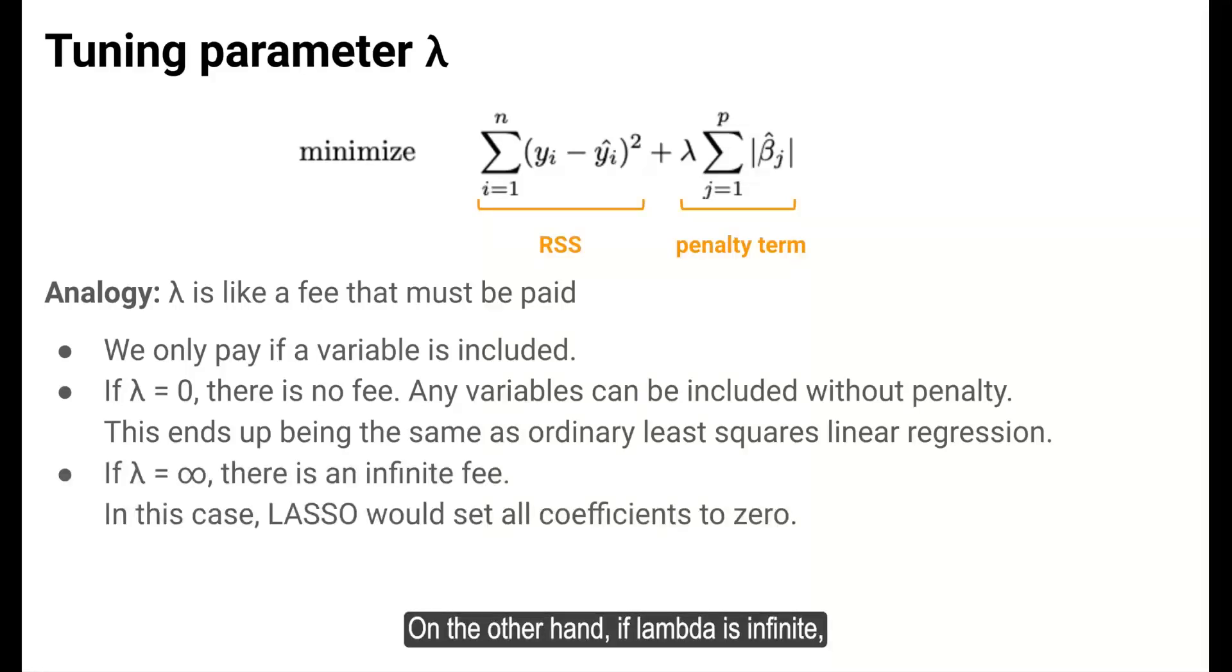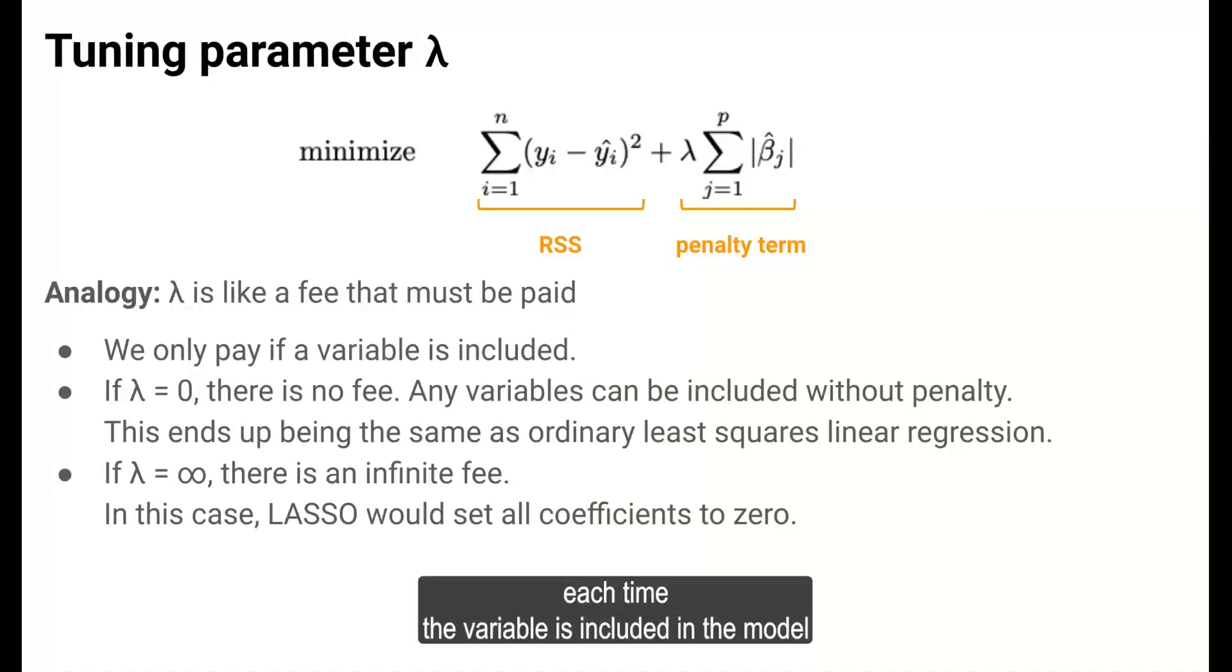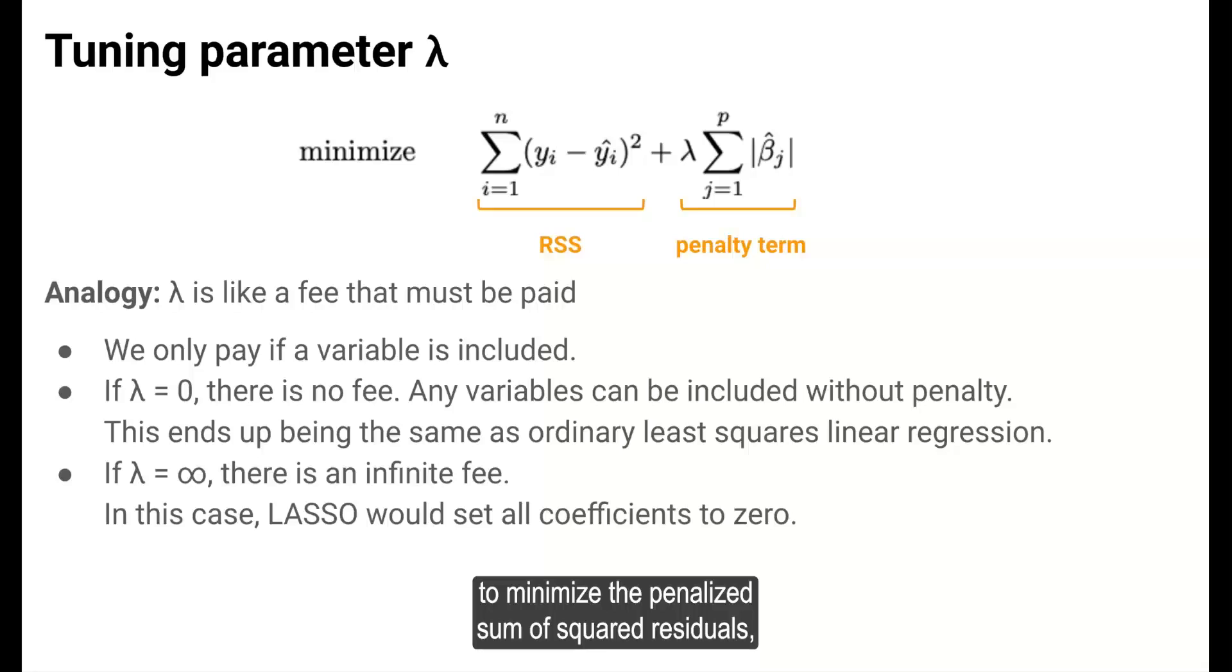On the other hand, if lambda is infinite, then we pay an infinite fee each time a variable is included in the model. To minimize the penalized sum of squared residuals, then we'd have to not include any variables in the model because even including one would incur an infinite penalty.